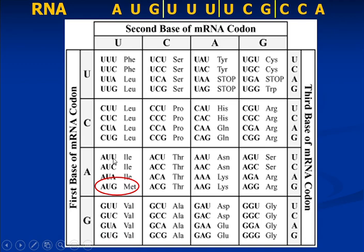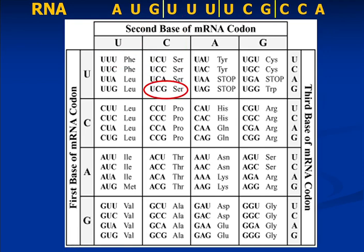You can search for the actual triple codons, but as a rule of thumb go first base, second base, third base. You do not have to know what the abbreviations mean — you don't need to know that MET is methionine; just write down the little abbreviations. If you have a stop codon, write it as 'stop'; MET is sometimes written as 'start'. Next, UUU: first base U, second base U, third base U — that gives PHE. Then UCG gives SER. And CCA gives PRO. That's how you read a codon table — nice and easy.